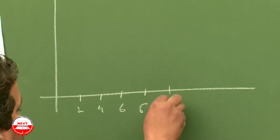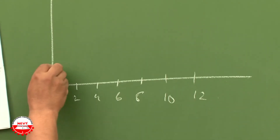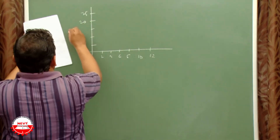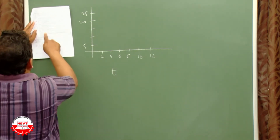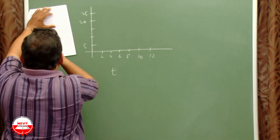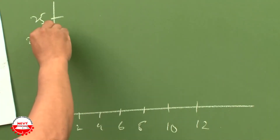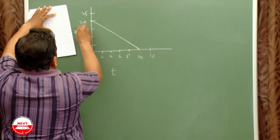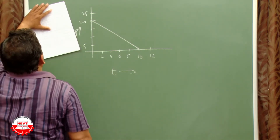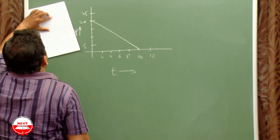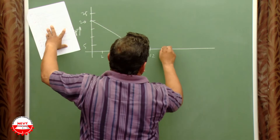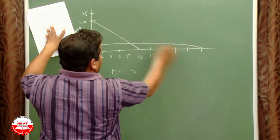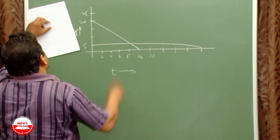The speed-time graph for motorcycle A is a straight line from speed 20 m/s at t = 0 to speed 0 at t = 10 s. For motorcycle B, the graph is a straight line from speed 5 m/s at t = 0 to speed 0 at t = 20 s.